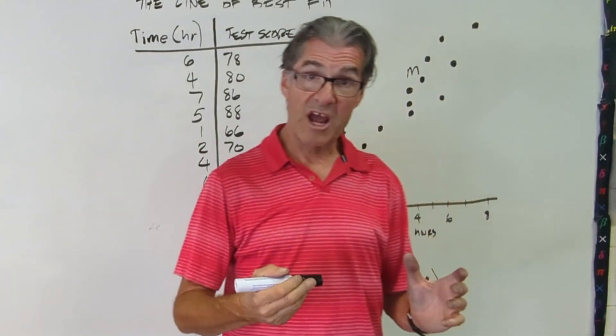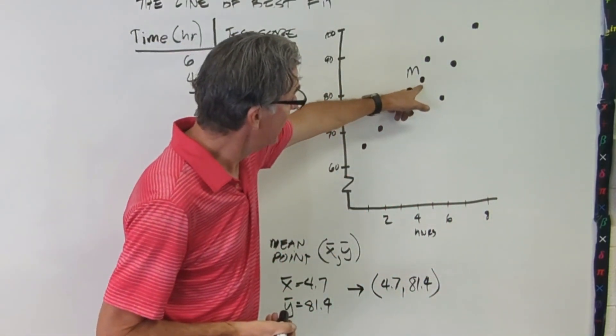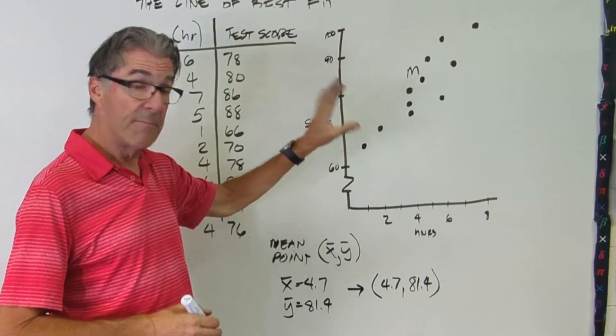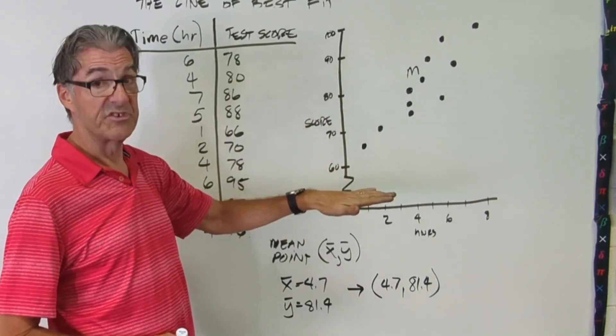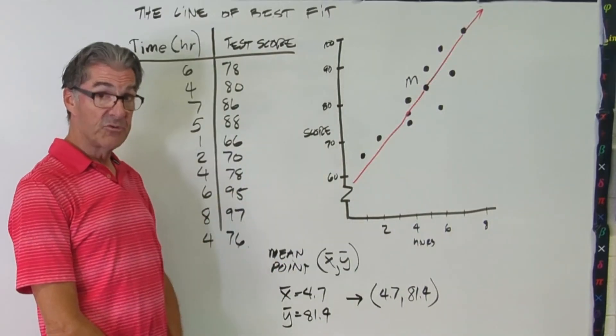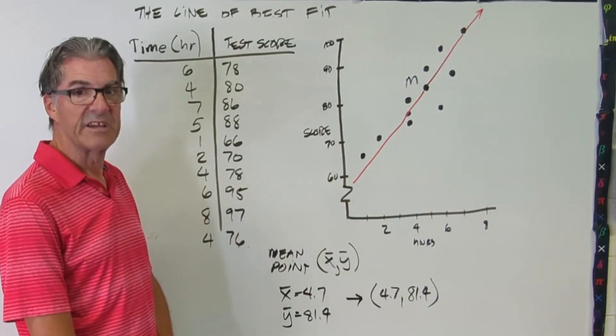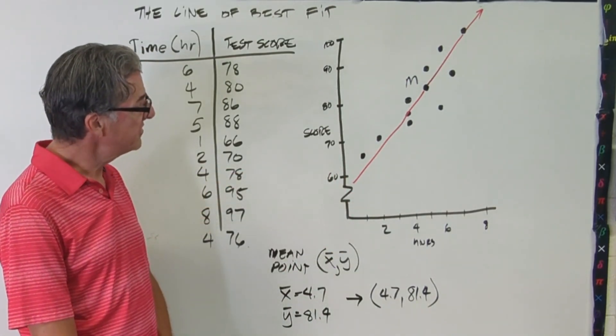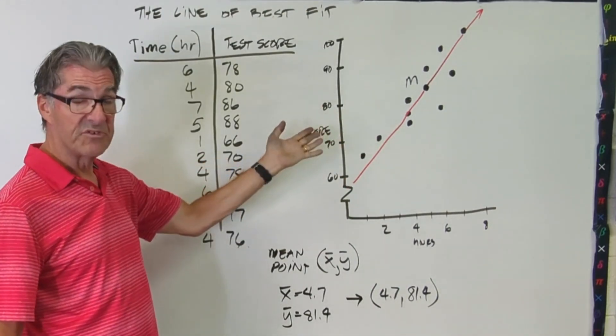Now, the next step, and I want you to try this, is to draw a straight line that goes through the mean point that has an equal amount of data points above that straight line as below the straight line. So pause the video and do that. If you want to use a ruler, that's a good trick. Here's what I got. Here's my red line. I used red just to distinguish. You could use black, it's fine.